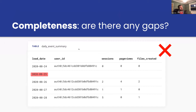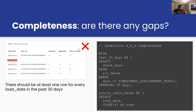The third dimension is completeness — are there gaps in the data? You'll have datasets where you know there should be data for every day, hour, or week. This often goes wrong when an ETL system loading data into your warehouse fails, leaving gaps. You can write an assertion to check that there's at least one row for every load date in the past 30 days. Again, if the query returns results, it's a failure; no results means a test pass.